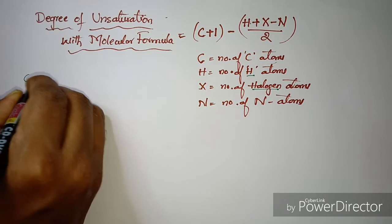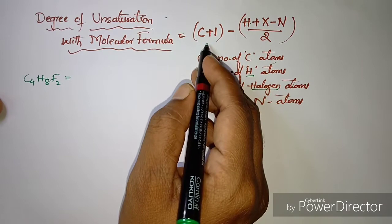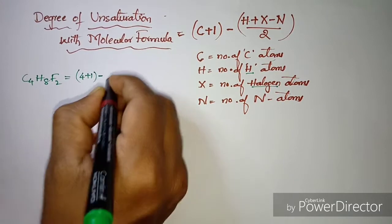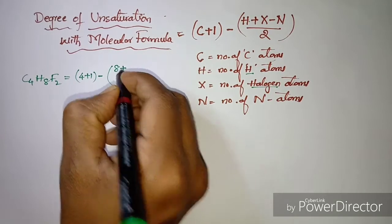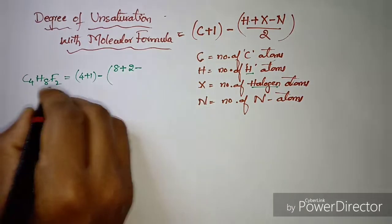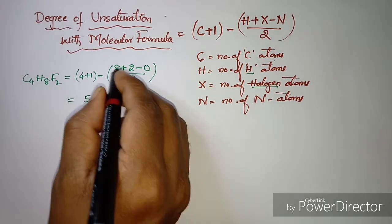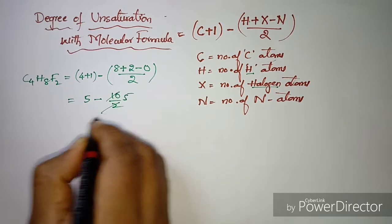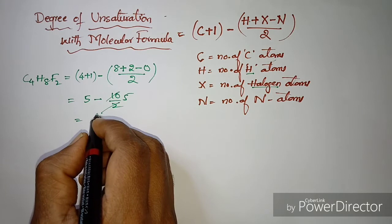Let's take an example like C4H8F2. Applying the formula: C + 1 = 4 + 1 = 5. Minus H — we have eight hydrogens. Plus X — we have two halogen atoms. Minus N — there are no nitrogen atoms. All divided by two. That will be: (5 − (8 + 2)) / 2 = (5 − 10) / 2... which gives zero.